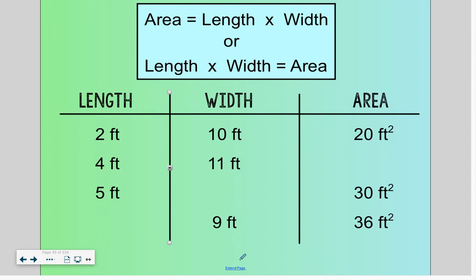Finally, if area is length times width, then you can use that to figure out unknowns. So if we had a rectangle that was two by 10, our area would be 20 feet squared. If we had a four by 11, it would be 44 square feet, or ft with the little two.